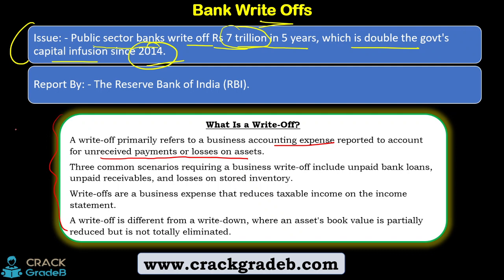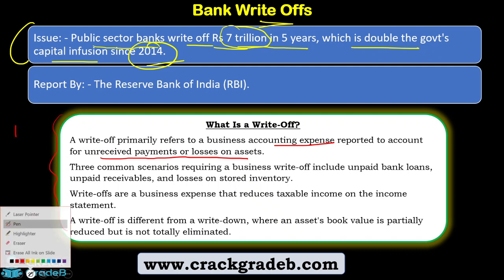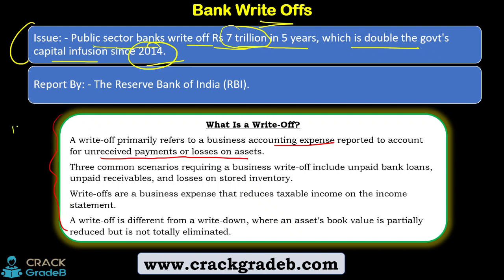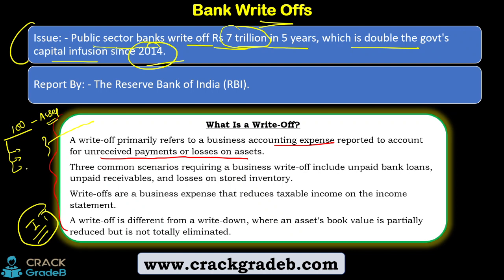What is a write-off? A write-off refers to a business accounting expense reported to account for unrealized payments or losses. For example, if a bank has lent Rs 100 to you, that is an asset for the bank. Till the time you pay your EMI on time, the bank is making profit and that profit is taxable. When you stop paying your EMI, that asset becomes a non-performing asset (NPA). There are different parameters like SMA1, SMA2, SMA3.